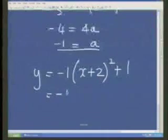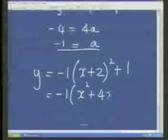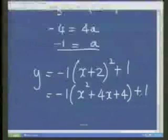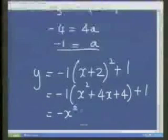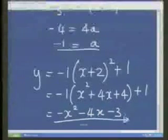And if you simplify that or expand that, that's x squared plus 4x plus 4 plus 1. So we get negative x squared minus 4x minus 4 plus 1 is minus 3, which is the same equation.